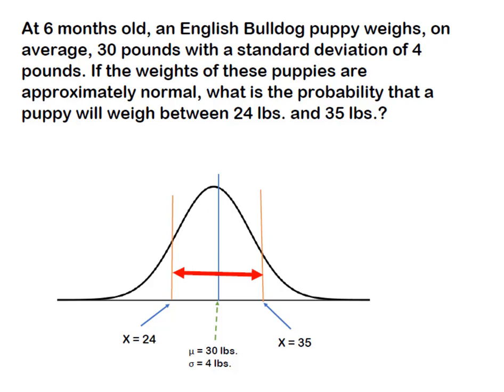At six months old, an English Bulldog puppy weighs on average 30 pounds with a standard deviation of 4 pounds. If the weights of the puppies are approximately normally distributed, what's the probability that a puppy is going to weigh between 24 and 35 pounds?